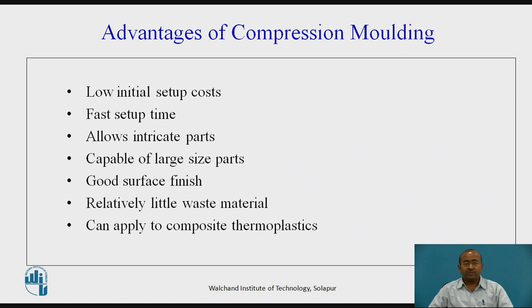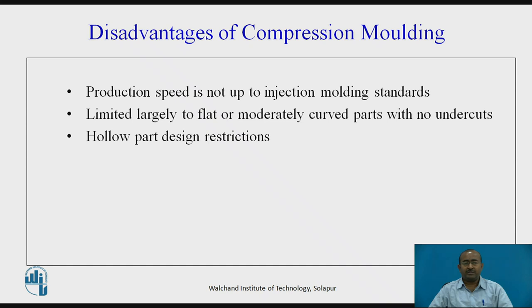The advantages of compression molding include: low initial setup cost, fast setup time, ability to produce intricate parts, capability for large-size parts, good surface finish, relatively little waste material, and applicability to composite thermoplastics. Disadvantages include: production speed is lower compared to injection molding, it is limited largely to flat or moderately curved parts with no undercuts, and it does not allow the production of hollow parts.